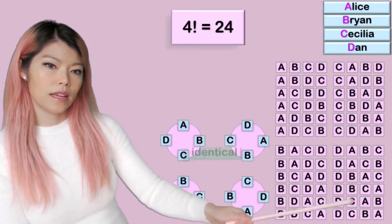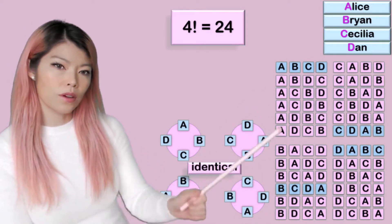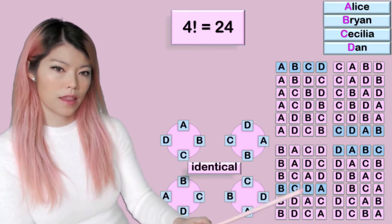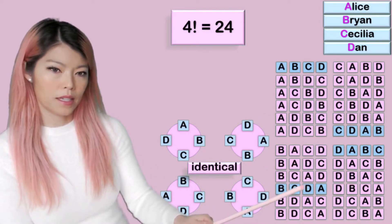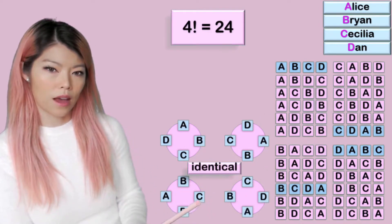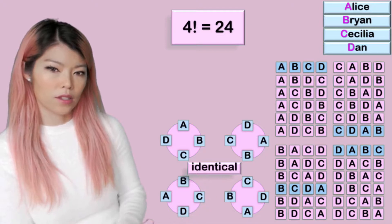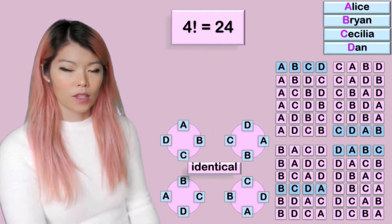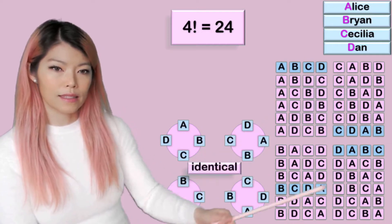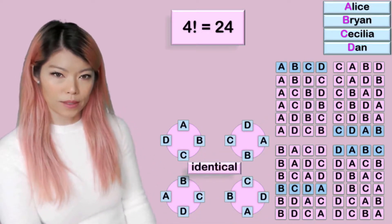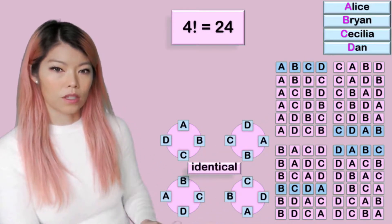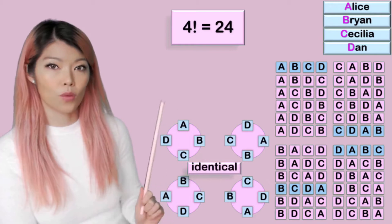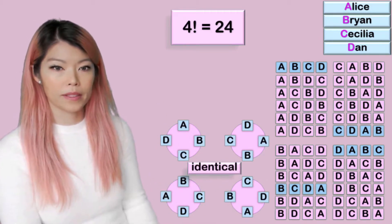Where are they in this list? There, there, there, and there. A, B, C, D is that one over there — so these are all the same. In a circle, there will be fewer arrangements because these four arrangements would be counted as one, because they are identical.